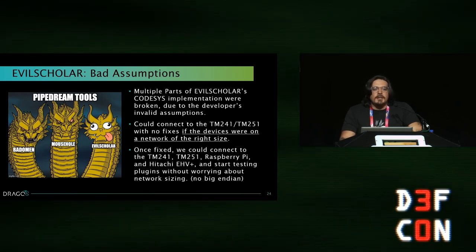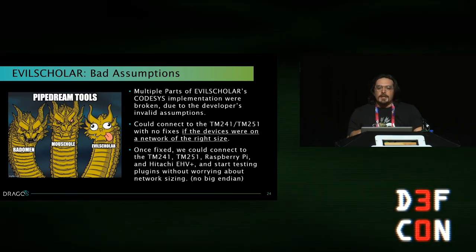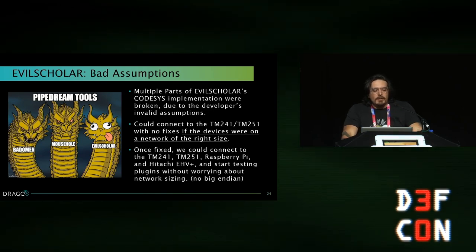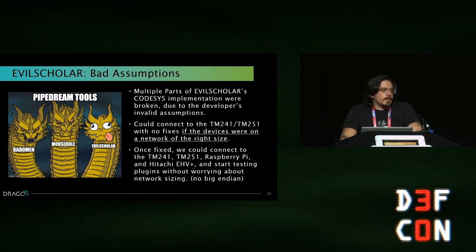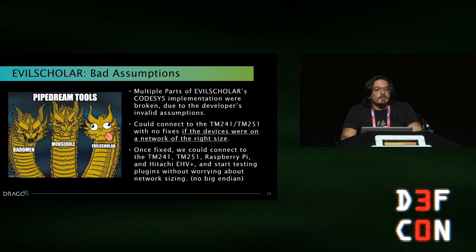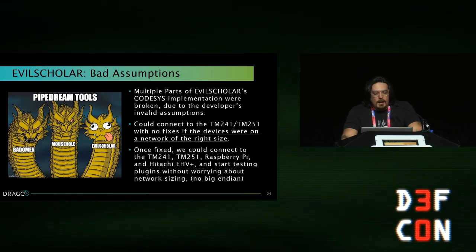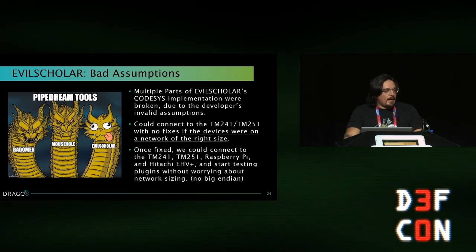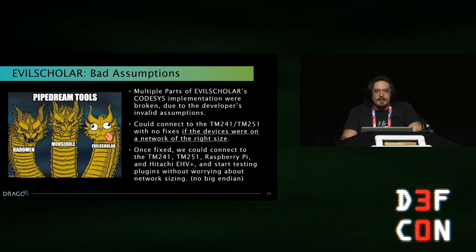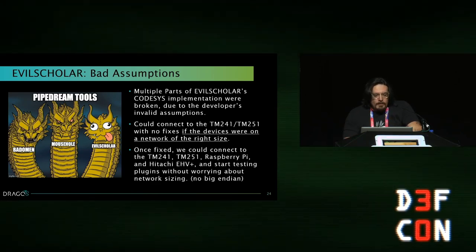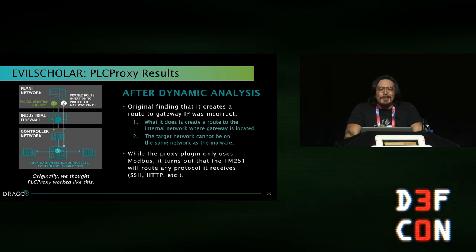We had a lab where we could connect to devices just fine and another where we couldn't connect at all. This took us the longest to sort out. We thought it was a firmware issue, but it turned out Evil Scholar is the problematic one in the group — the developer made poor assumptions about CODASYS, including assumptions about network size and address sizing, which is variable length in CODASYS. The default version of Evil Scholar could connect to the TM241 and TM251 with no fixes if devices were on a network of the right size.